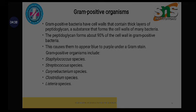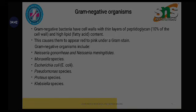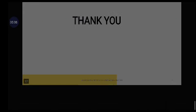Examples of gram negative microorganisms include Neisseria gonorrhoeae, Neisseria meningitidis, Escherichia coli, Pseudomonas species, Proteus species, and Klebsiella pneumoniae. Gram negative cells have very thin layers of peptidoglycan — only about 10 percent of the cell wall — and higher lipid and fatty acid content.